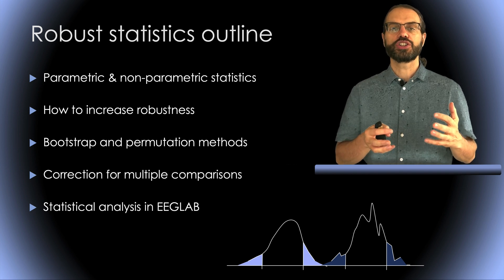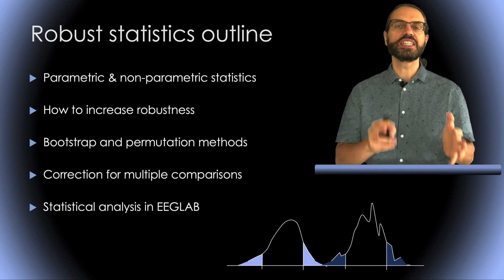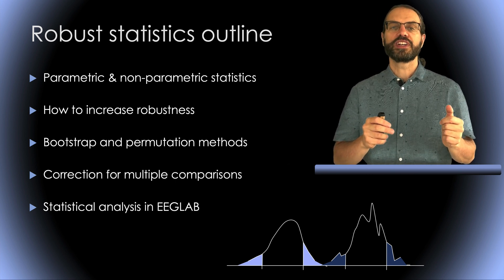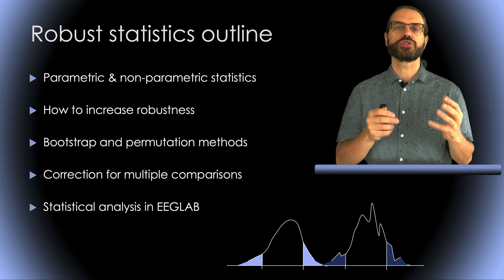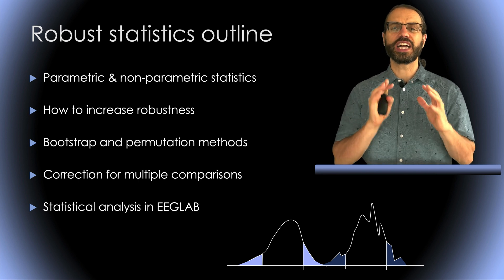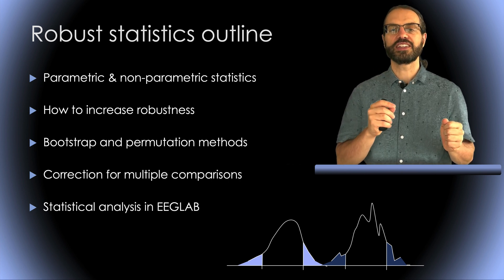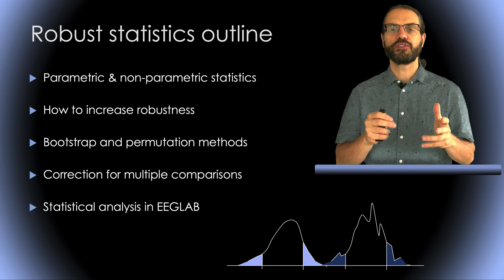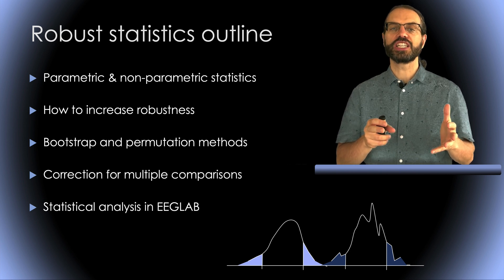So this is the outline of this lecture. First, we will talk about parametric and non-parametric statistics, which means basic statistics, t-test, ANOVA, etc. Then I will talk about what we can do to improve that. I will then describe the bootstrap and permutation method, which consists in building surrogate distribution of values to perform inferential statistics. Also, in EEG, we perform large numbers of comparisons, usually one for each time sample or each time frequency point. So it is important to correct for all these statistical tests, something we call corrections for multiple comparisons. I will talk about different methods for correcting for multiple comparisons commonly used for EEG. Finally, we will talk about group-level statistical analysis of EEG data in EEGLAB.